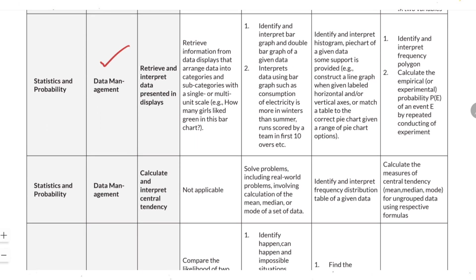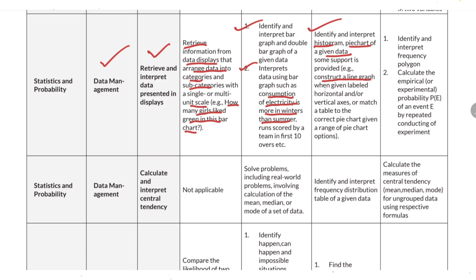The final major topic is statistics and probability, starting with data management. You need to retrieve and interpret data represented in displays — retrieving information from data arranged into categories and subcategories with single or multiple unit scales. For example: how many girls like green in a given bar chart. Topics include identifying and interpreting bar graphs and double bar graphs; interpreting data using bar graphs; identifying and interpreting histograms and pie charts; constructing a line graph given labeled axes or matching a table to the correct pie chart; and identifying and interpreting frequency polygons.